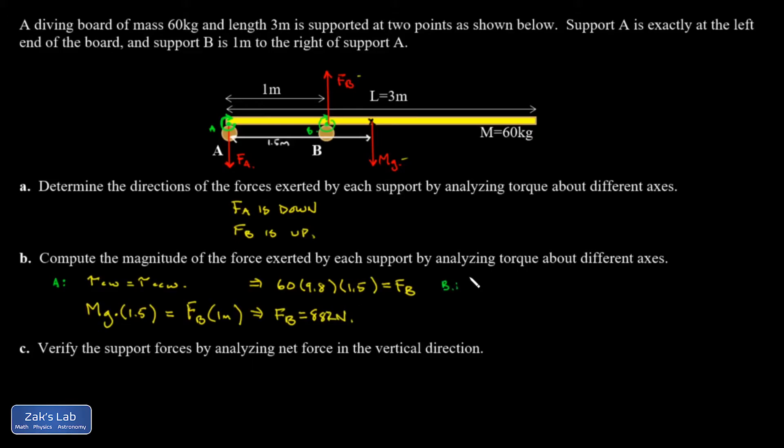Next, I analyze torques with respect to rotation axis B. So the force exerted by B is out of the picture. It exerts no torque with respect to that axis because the lever arm is zero. All I have to do is look at the clockwise torque exerted by gravity and the counterclockwise by FA.